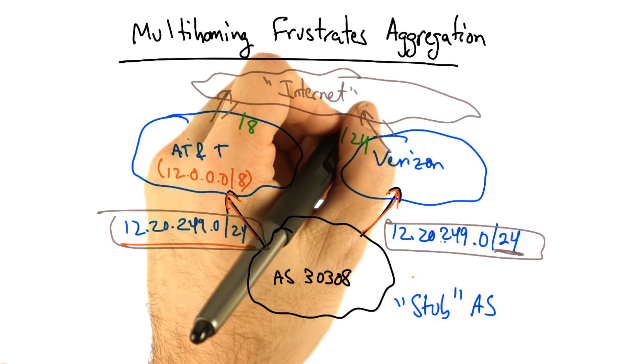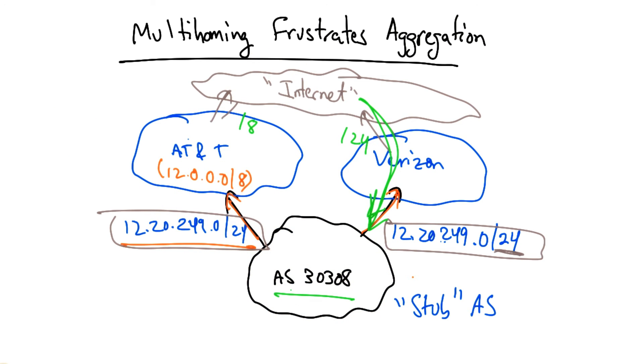And because of longest prefix match, all of the traffic would then arrive via the Verizon link, regardless of what AS30308 wanted to have happen to that incoming traffic.